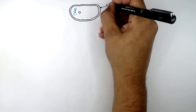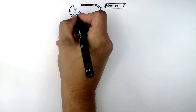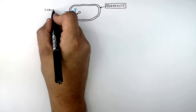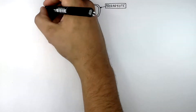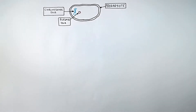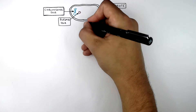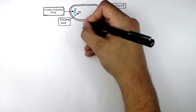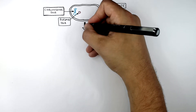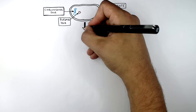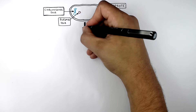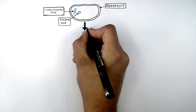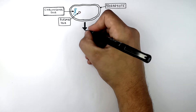So this here is a prokaryote, with plasmid DNA and chromosomal, or circular, DNA. Now I'm going to describe binary fission — this is the way in which prokaryotes like bacteria divide and replicate. It is similar to mitosis, but it is not mitosis. Prokaryotes divide and replicate by binary fission.